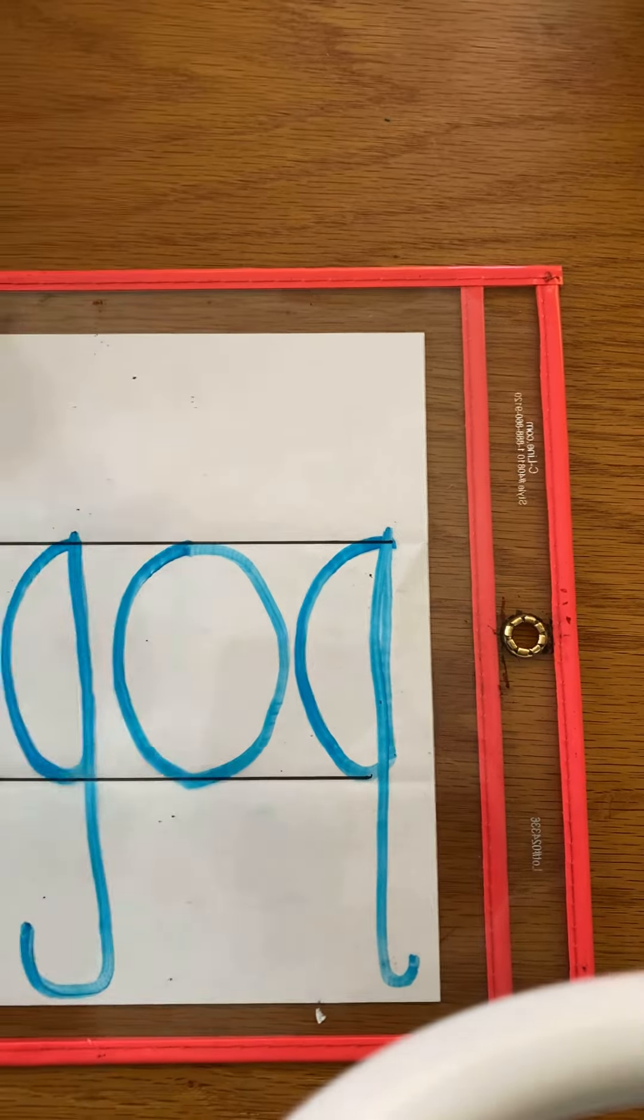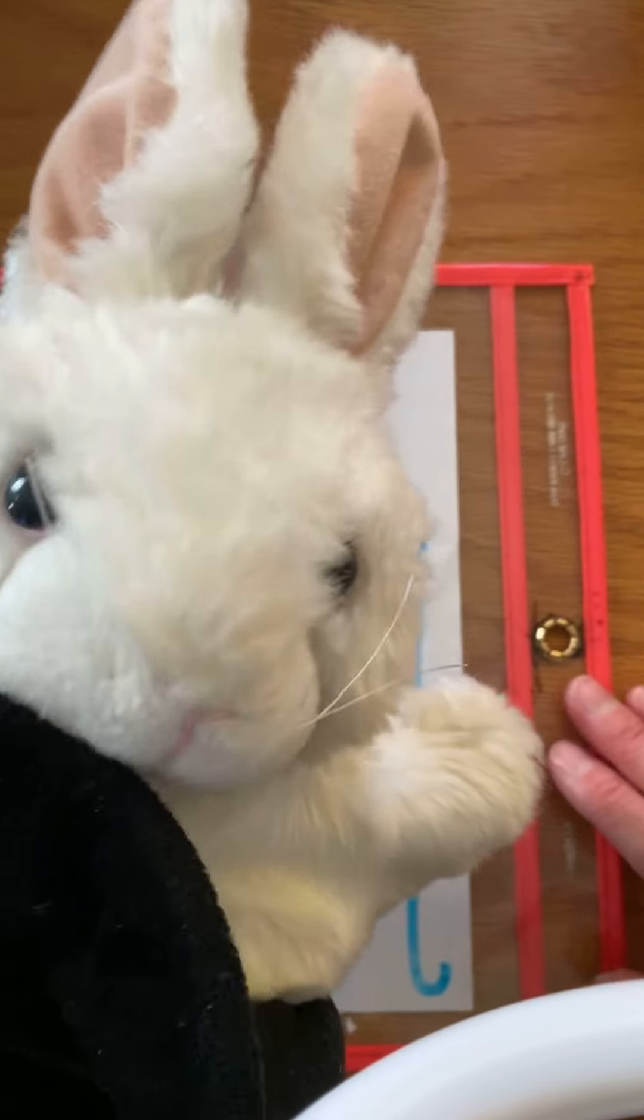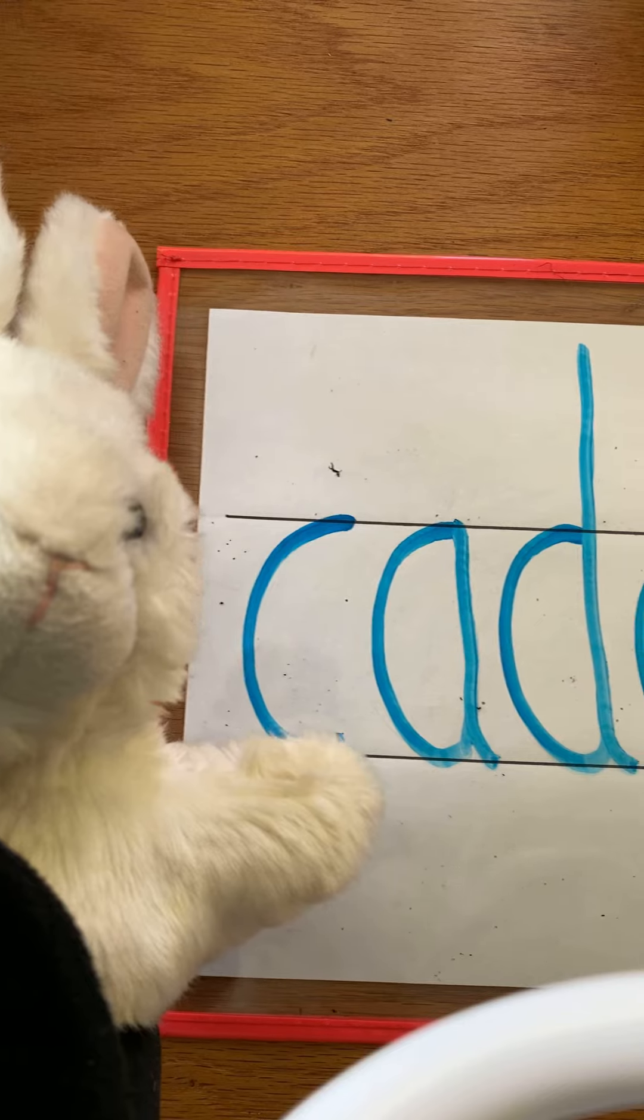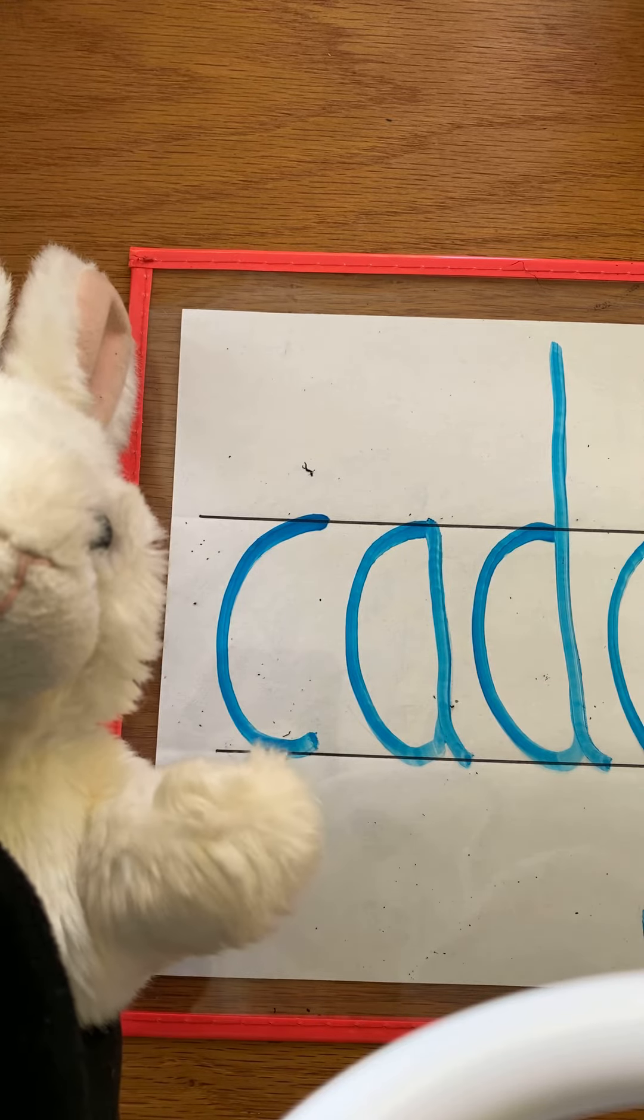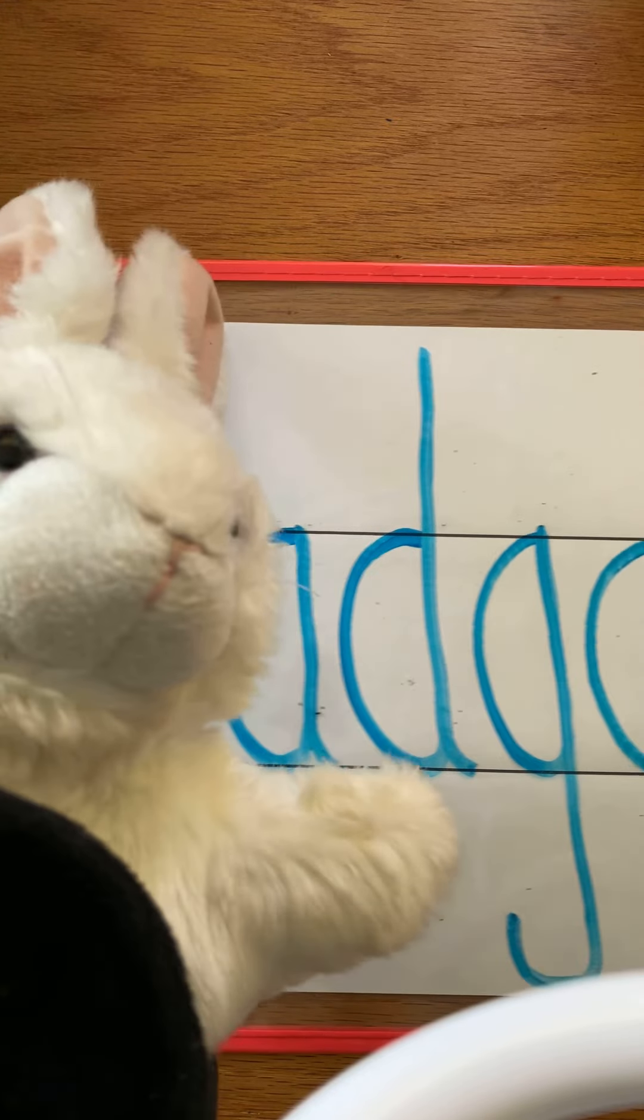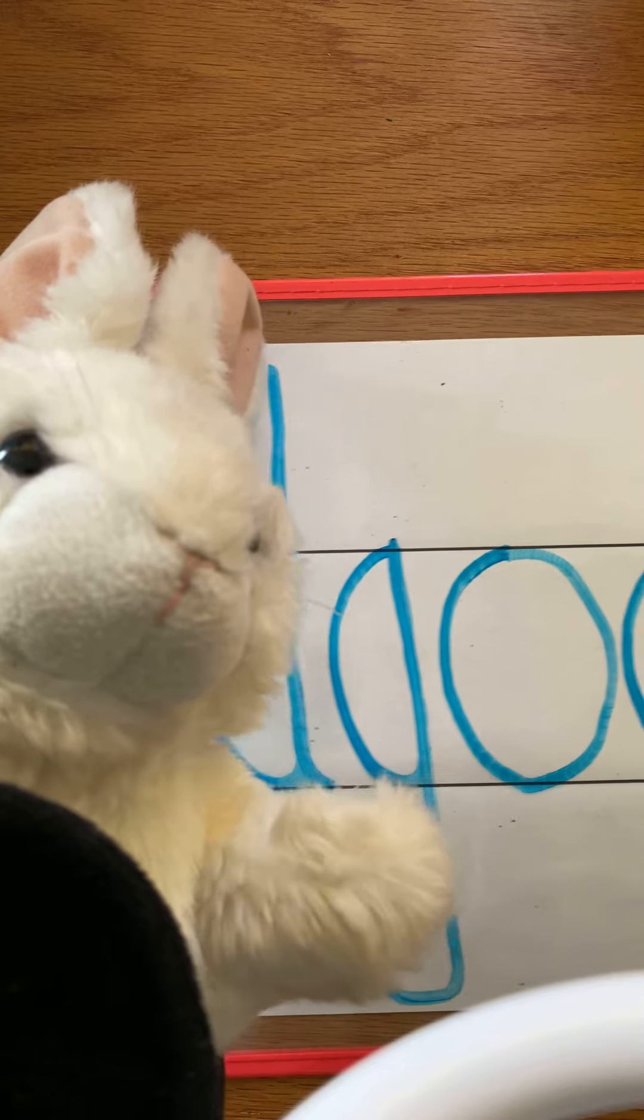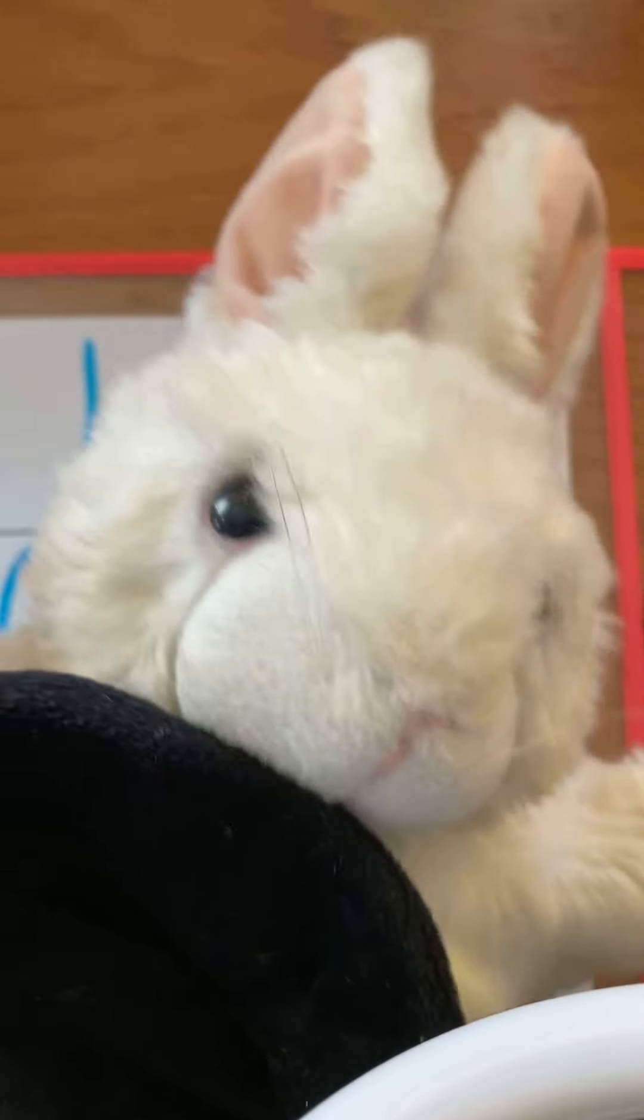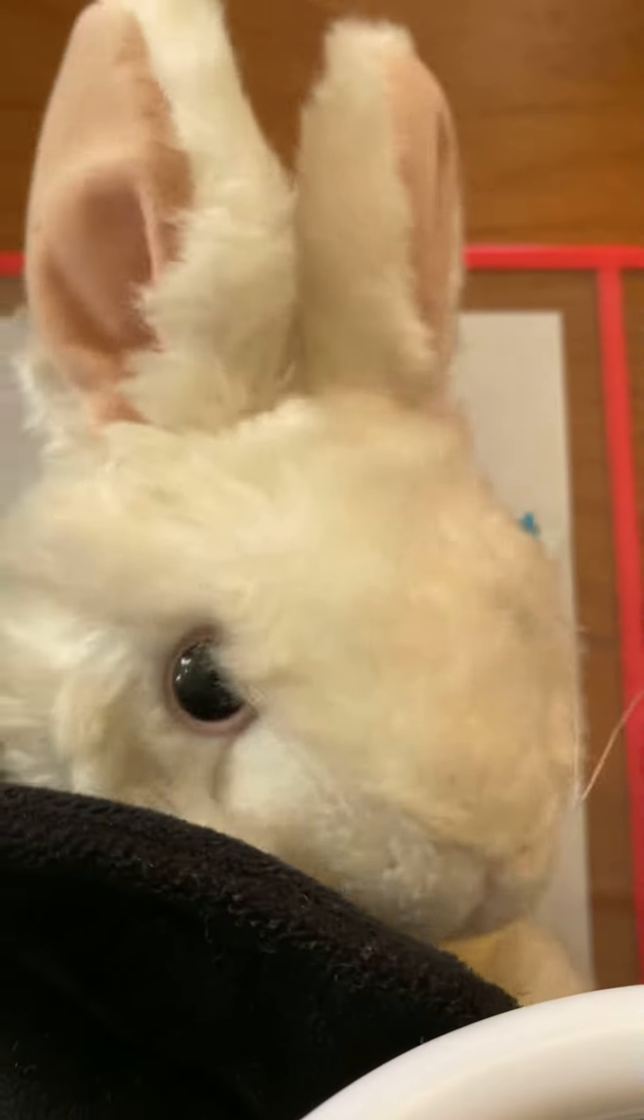There you have it! Today we learned how to write a C and then to turn that C into an A, a D, a G, an O, and a Q. Don't forget all those letters start the same way!